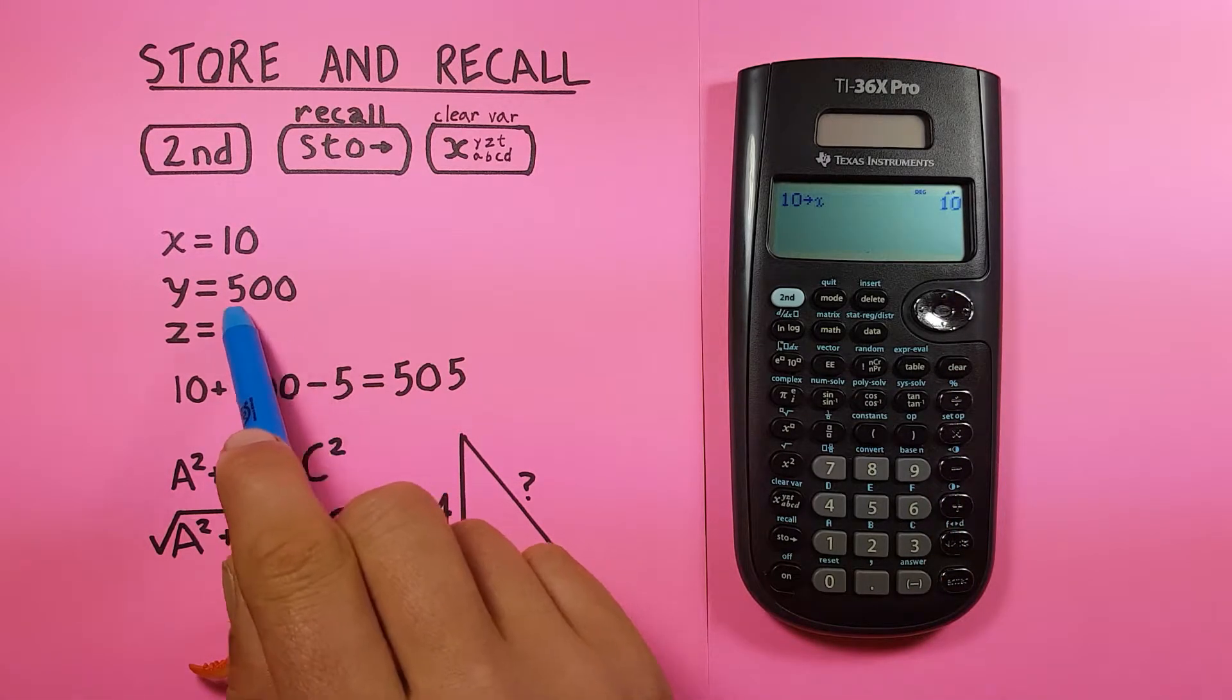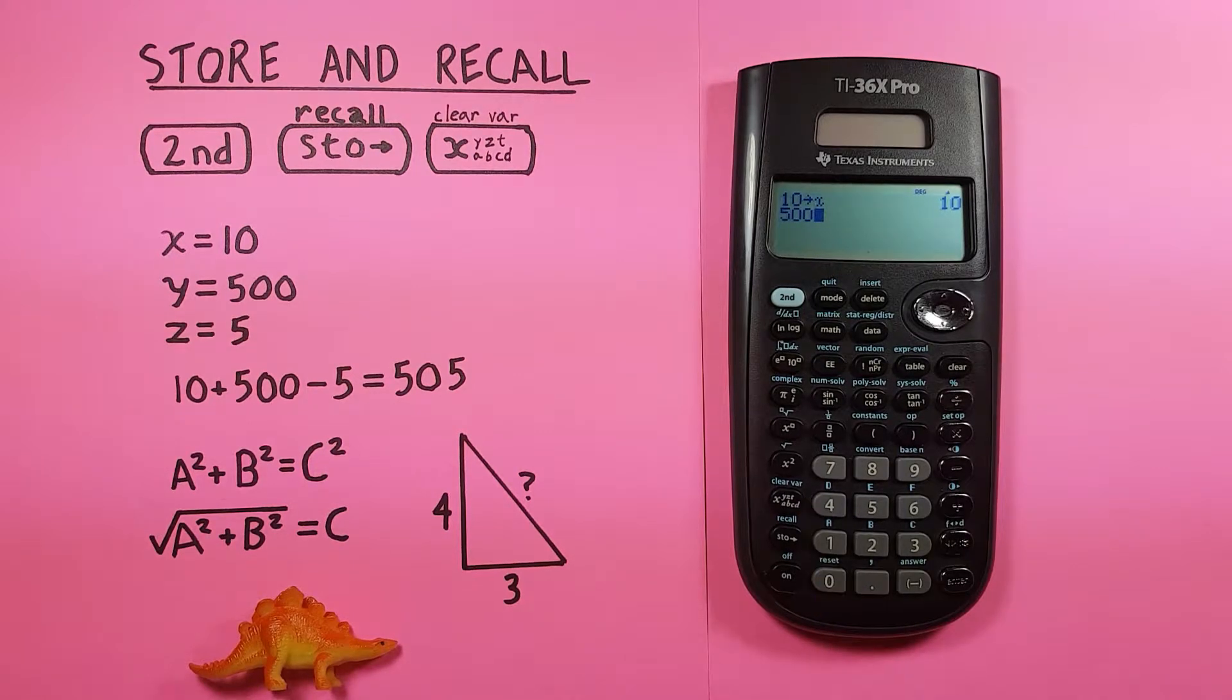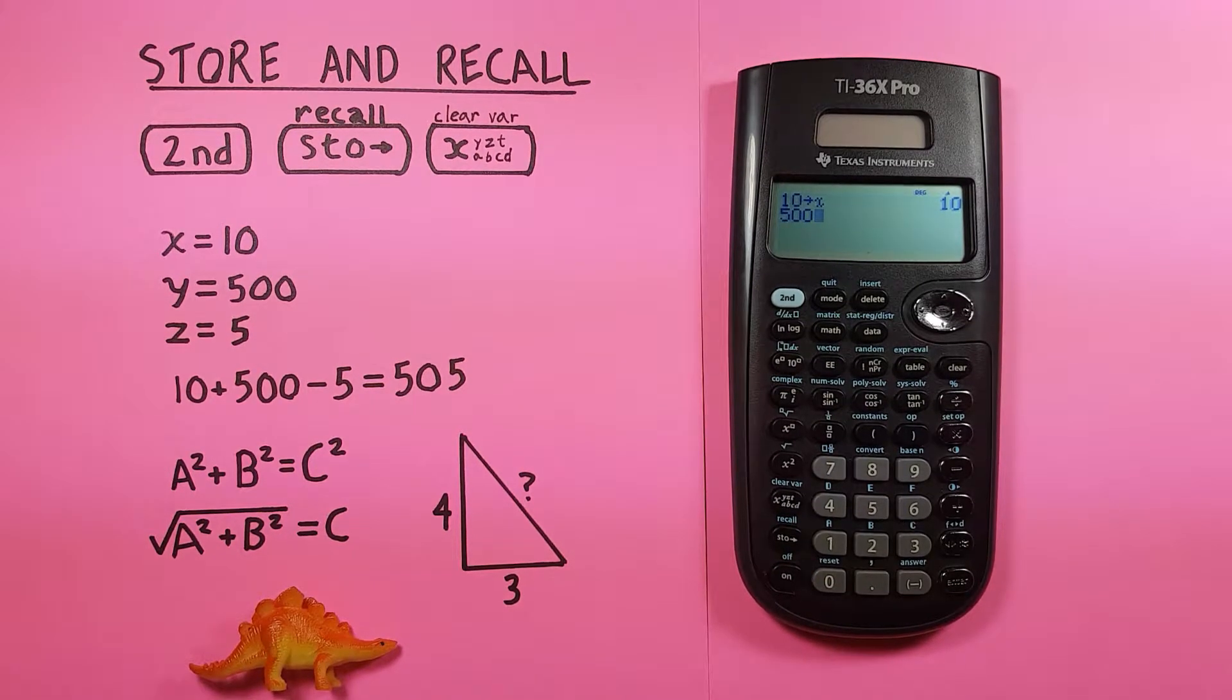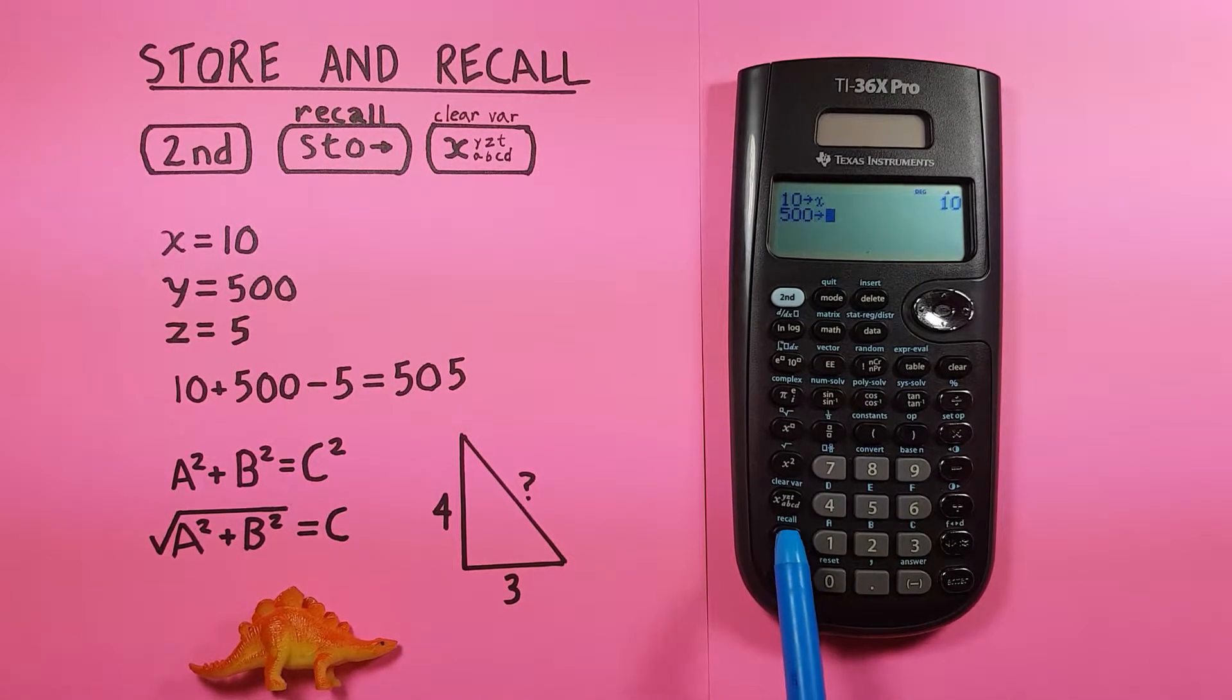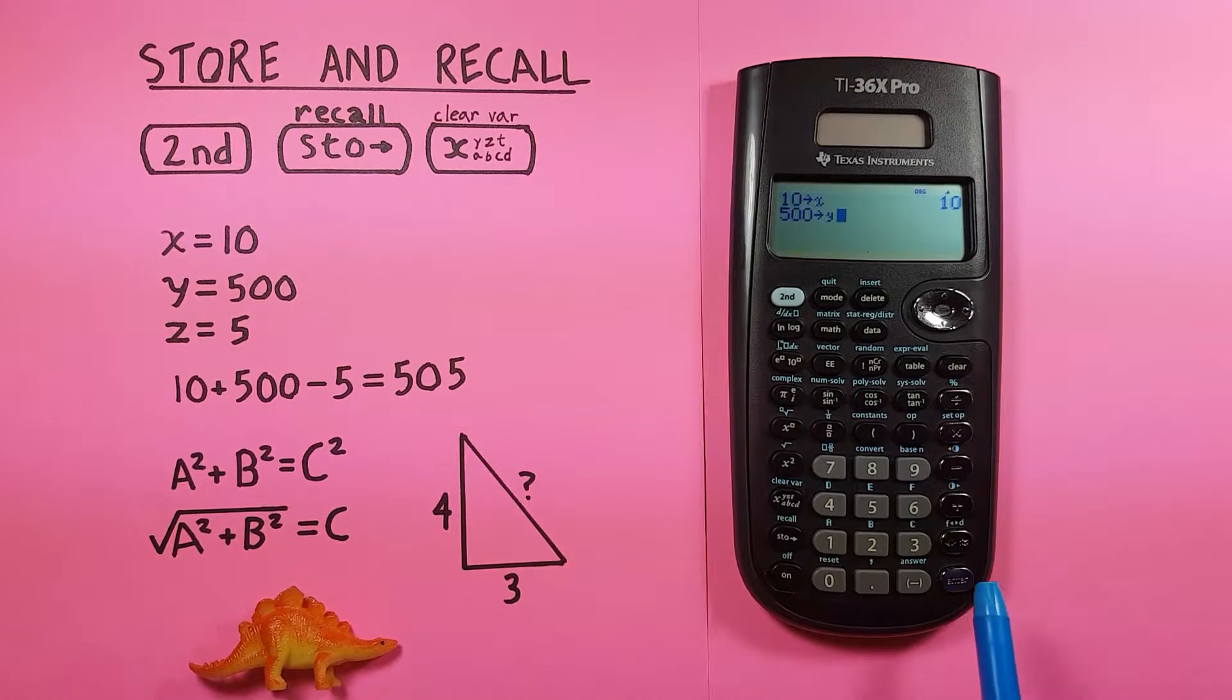Now if we want to put say 500 into our Y, again, 500 on the screen, and we want to put this into the Y slot. Again, we press the STO key, and then the XYZ key there. You can see now we have 500 into Y, and press enter.